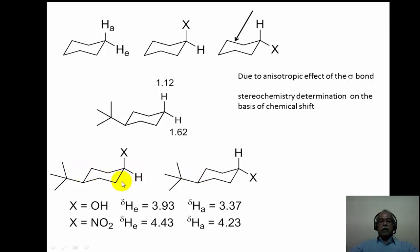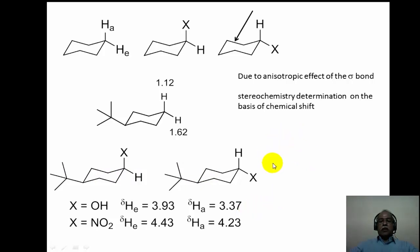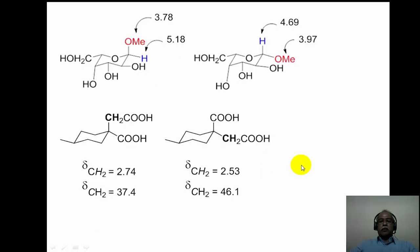These are essentially diastereoisomers — the cis isomer and the trans isomer — which can be easily distinguished purely based on the chemical shift values of hydrogens identified as equatorial or axial in nature.